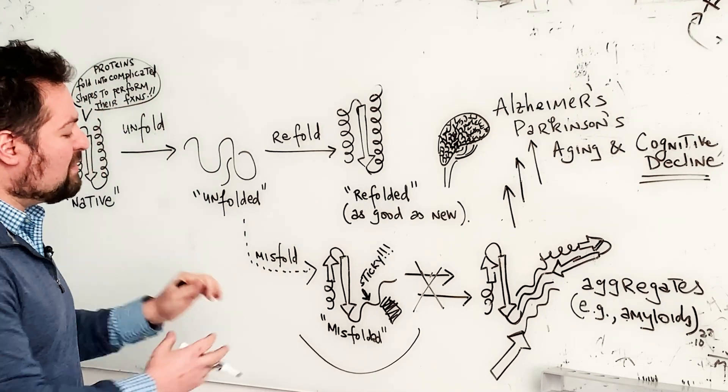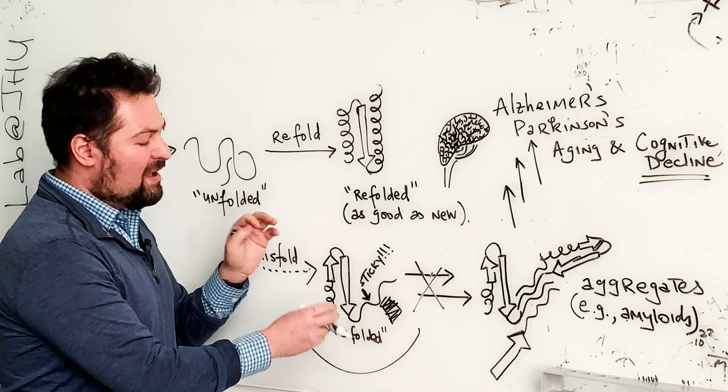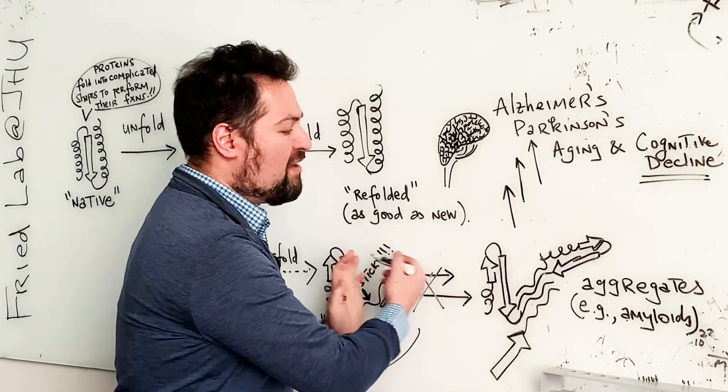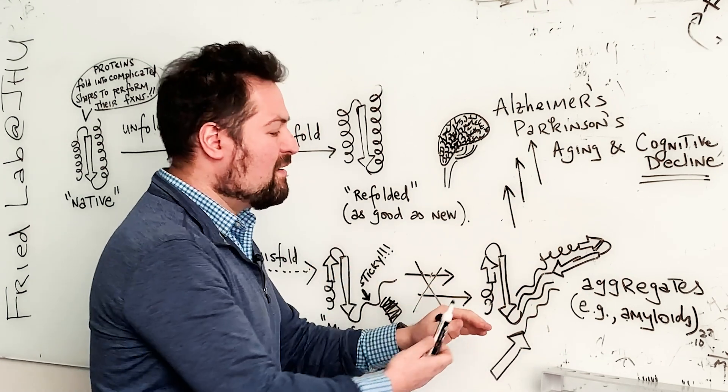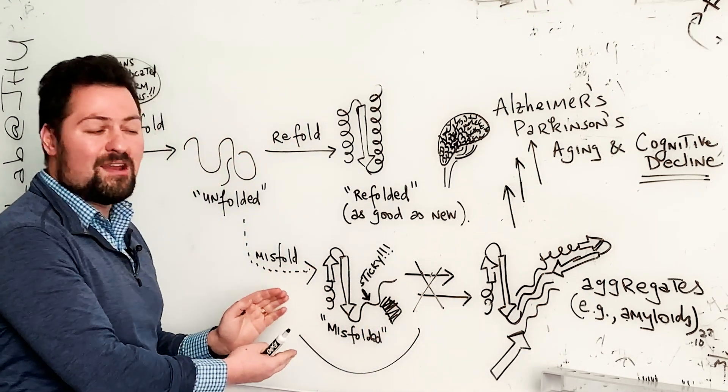We feel that if we can identify these misfolded states and stop them, we can basically prevent the pathway that leads to neurodegeneration from happening in the first place by essentially stopping the process at an earlier state.